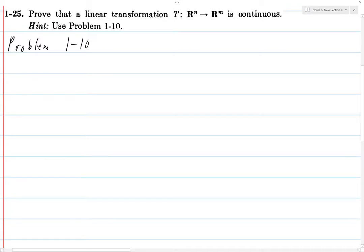What does this say? Okay, it says that if T: R^n to R^m is linear,